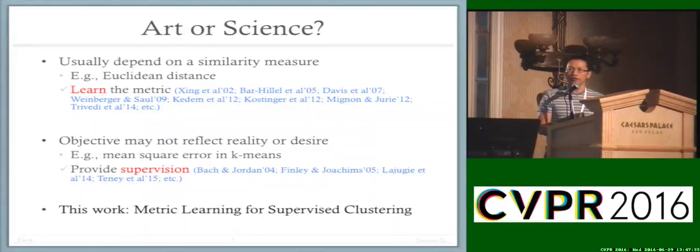The second reason is the objective or goal of a clustering algorithm may not truthfully reflect our reality. For instance, the mean square error in k-means may not reflect reality. The remedy is to provide some form of supervision for the algorithm. In this work, we try to learn a metric for supervised clustering.